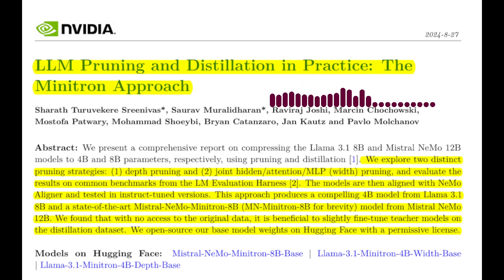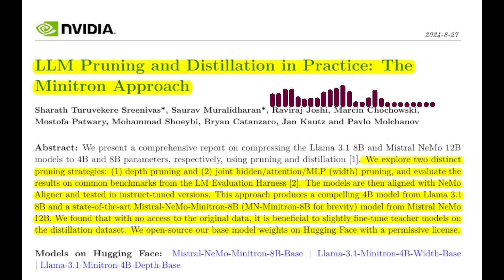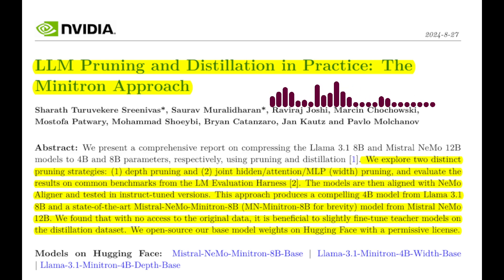Can you explain the core idea behind their method? The paper proposes a two-step process: pruning and retraining. First, they prune an existing large LLM by removing less important components, such as neurons, attention heads, or even entire layers. This reduces the model size. Then, they retrain the pruned model using a significantly smaller amount of data, leveraging knowledge distillation techniques.